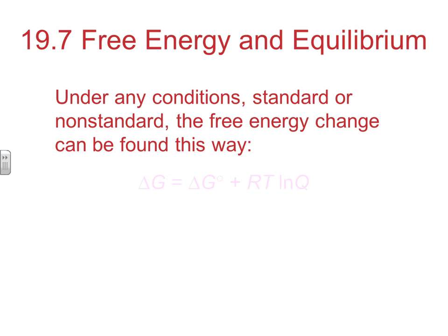Under any conditions, standard and non-standard, the free energy change can be found by the following equation. If you're under standard conditions, one molar, one atm of pressure, all you really need to do is use the formation Gibbs free energies in Appendix C, and you can calculate what the delta G-naught is. But if you're not under those types of conditions, so if you're at pressures other than one, or concentrations other than one molar, you'd need to find the delta G that's under non-standard conditions. Notice there's no little naught here.